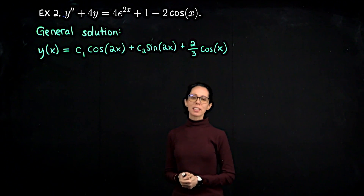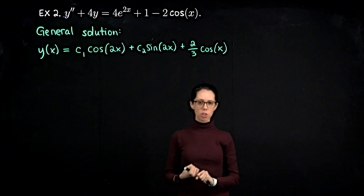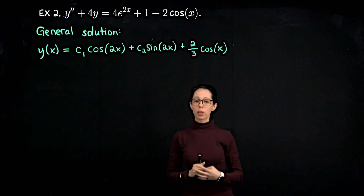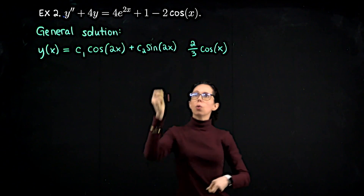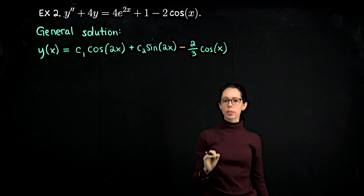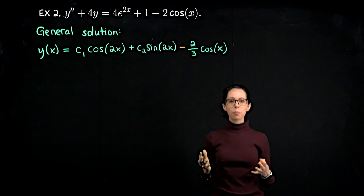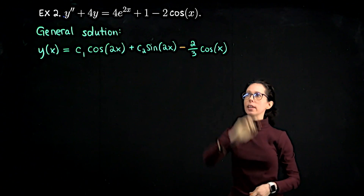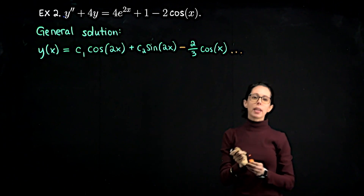The left-hand side is the same, so we have the same homogeneous solution. Looking at the right-hand side, we have 4e to the 2x plus 1 minus 2 cosine of x. We just worked with 2 cosine of x, so we can reuse that. Two-thirds cosine of x satisfied the equation when the forcing function was 2 cosine of x. For the trig components of negative 2 cosine of x, through the same work as before, we'd arrive at negative two-thirds cosine of x. We just need to add more components to account for the exponential and the constant.